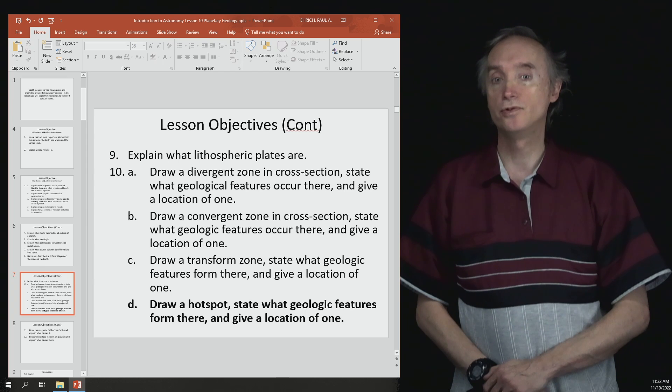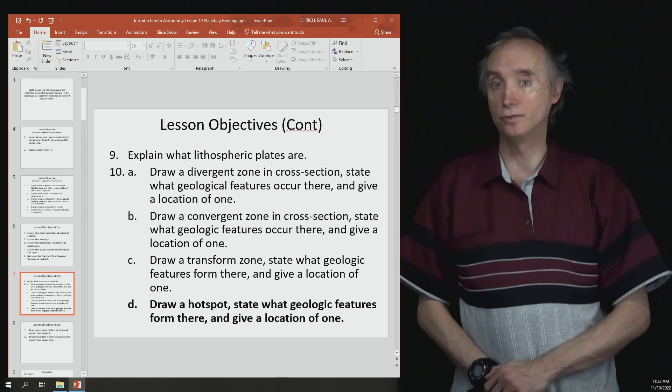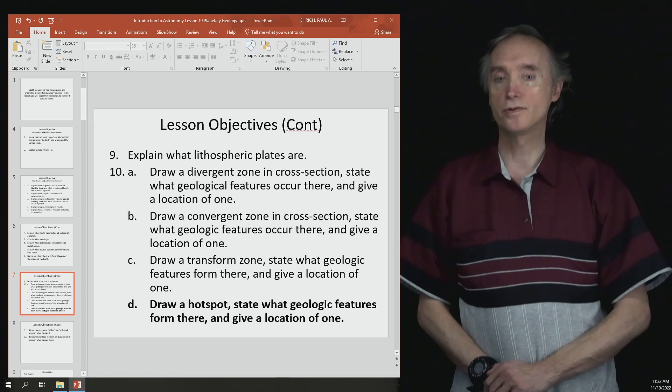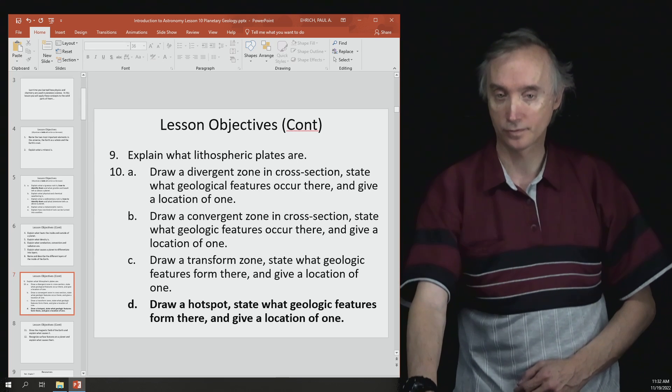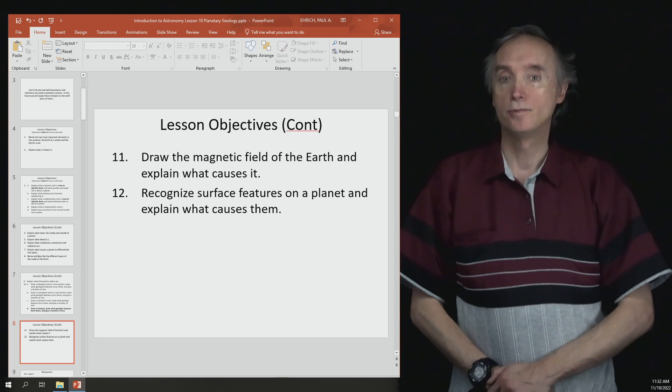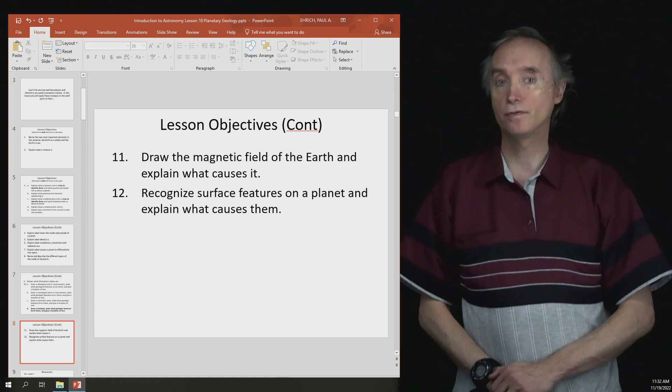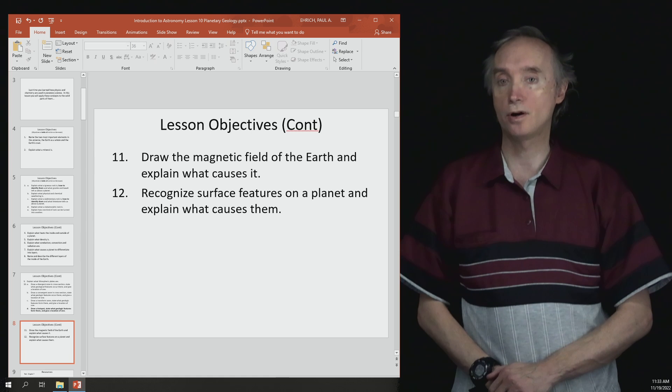Be able to draw a divergent zone, a convergent zone, and a transform zone, and be able to explain the different kinds of geological features that are created by each of these different kinds of plate interactions. Also you should know what a hot spot is. Be able to draw the magnetic field of the Earth and explain what causes it, and then recognize different surface features on a planet and explain what causes them.